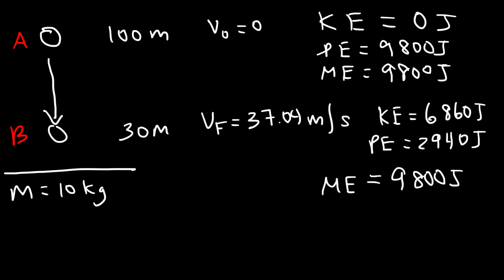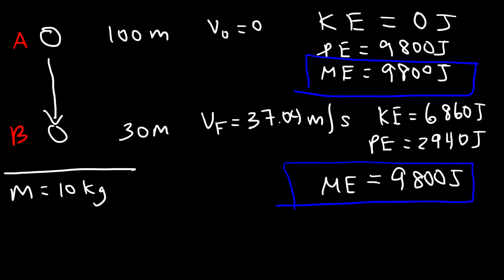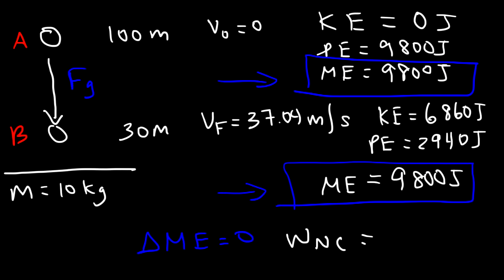Notice that the mechanical energy is conserved in this problem. Why? The only force acting on the ball is gravity — there's no friction, no air resistance, only a conservative force. Whenever you have a system where only conservative forces are present, the mechanical energy will be conserved. The change in mechanical energy is zero because the work done by all non-conservative forces is zero — they don't exist in this problem. This demonstrates the principle of the conservation of mechanical energy.